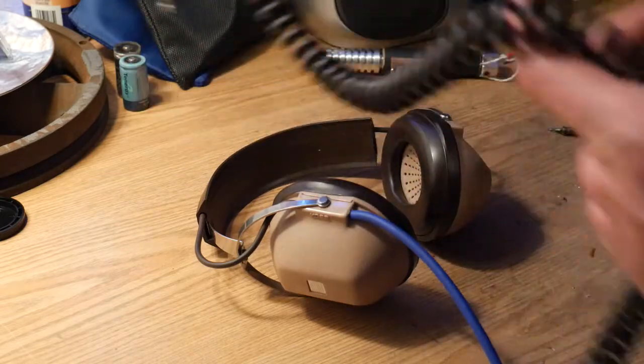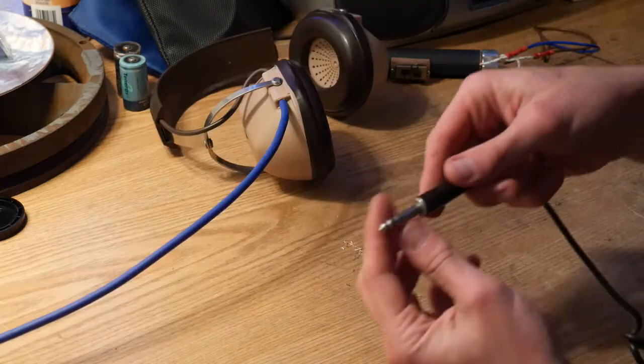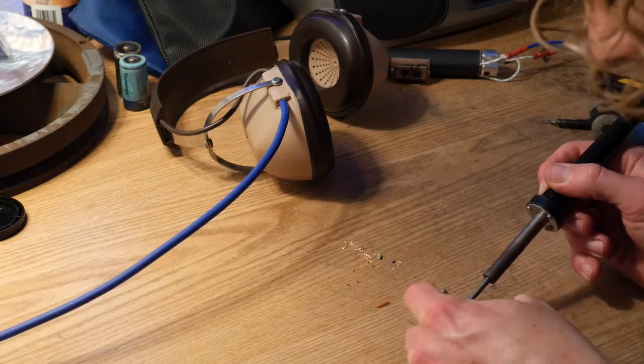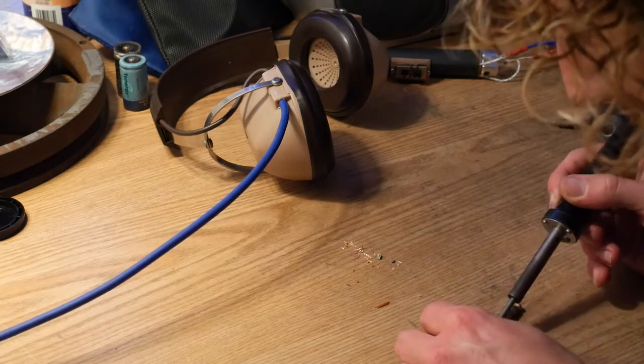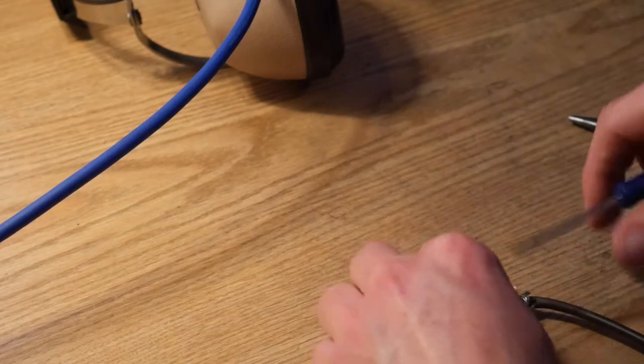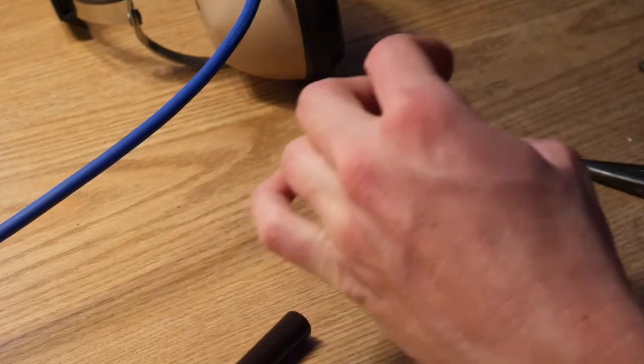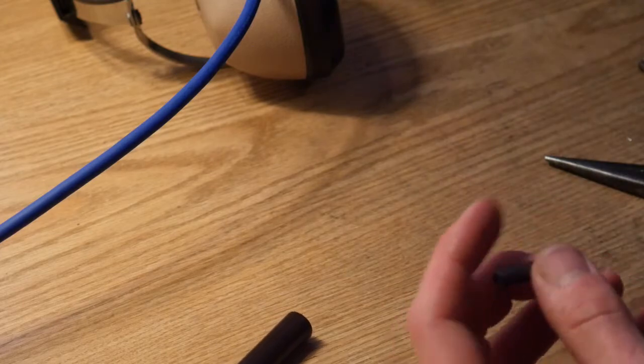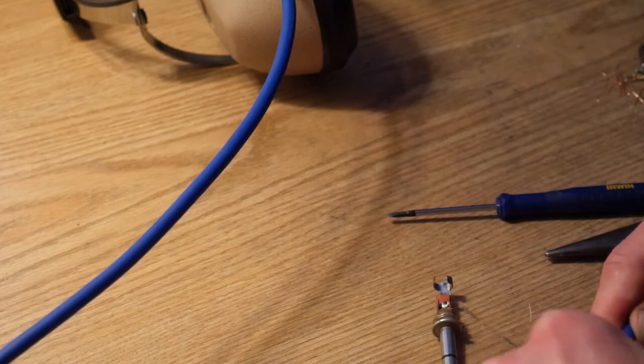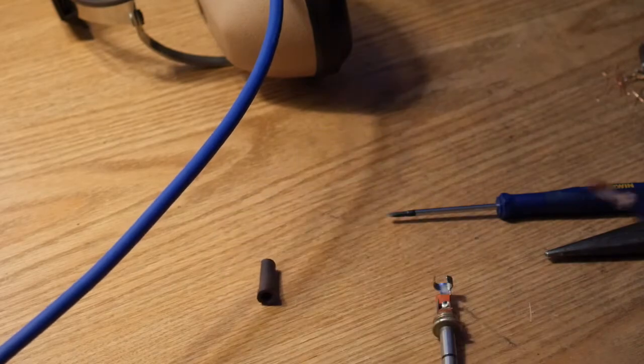Alright, now I'm gonna desolder the jack plug. But the stress relief is gonna be too small for this one. Why is the stress relief the part that's causing me the most stress? Alright, whatever, I'll just use heat shrink tubing like last time.